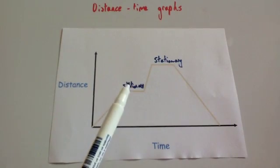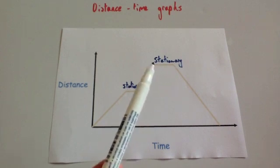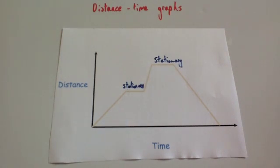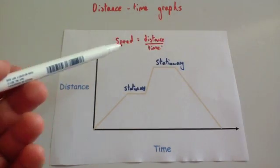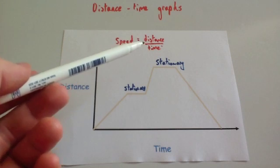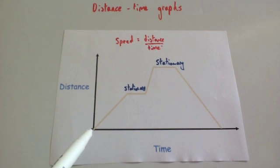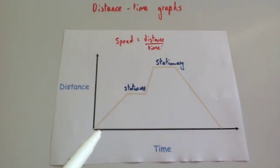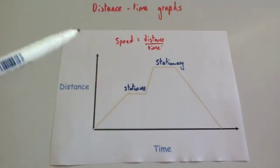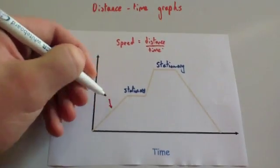Some key features of a distance-time graph: if there's a horizontal section, it means that the object is stationary — it's not moving any further distance from the starting point. Another important factor is that speed equals distance divided by time. So if you take a section, the distance traveled will be the rise and the time taken will be the run, meaning the gradient of that section will be the speed.